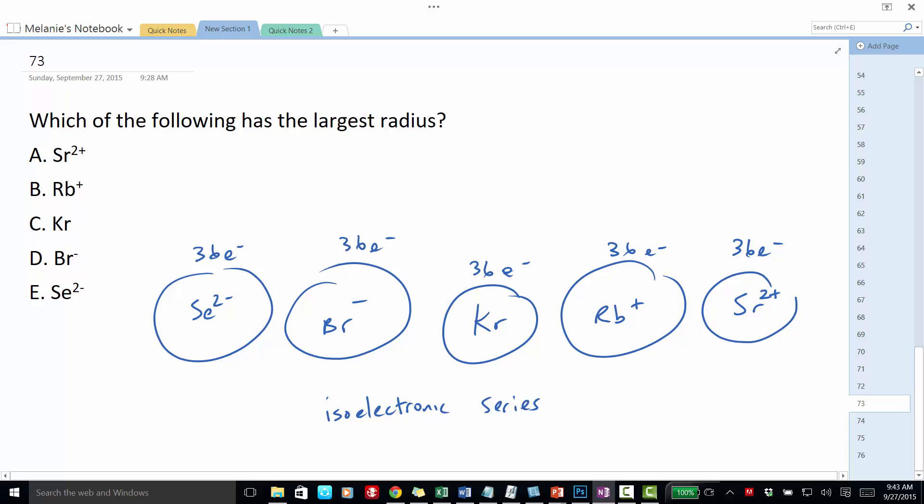So it may seem counterintuitive, but the smallest of these is going to have the most protons. You'd think the largest would have the most protons, but it's actually the smallest that has the most protons. Because the protons and the electrons, being opposite charges, they attract each other.